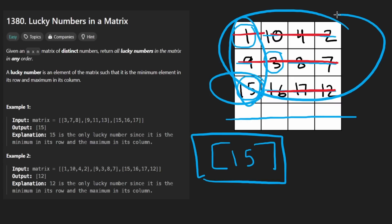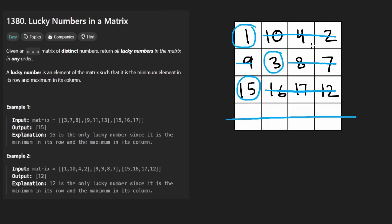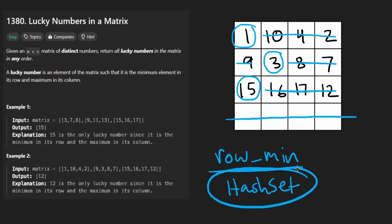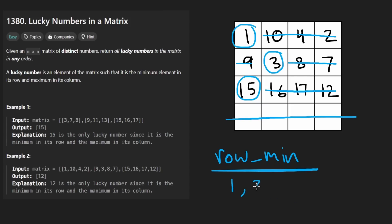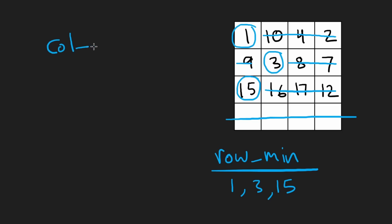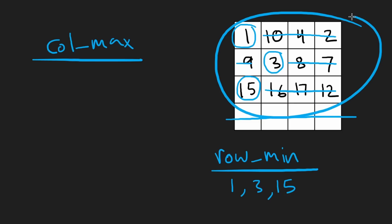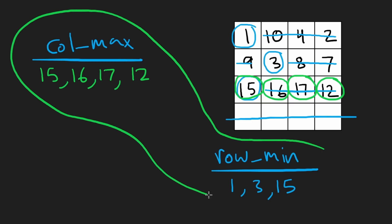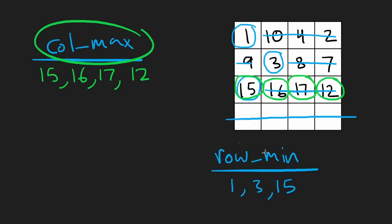So how could we code up a solution like that? The first phase of the algorithm is to get the row minimums, and I'm going to store them in a hash set. If we collect all the row minimums — in this example that's going to be 1, 3, and 15 — getting the column maximums is a bit more tricky, but we can follow the same process. The column maxes are 15, 16, 17, and 12. Can you tell how you could code this up? That's why I said I'd collect these in a hash set — so we can easily find the intersection.